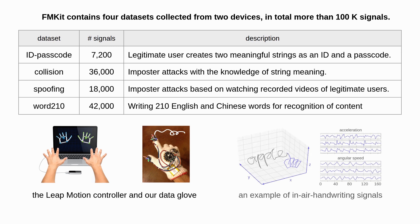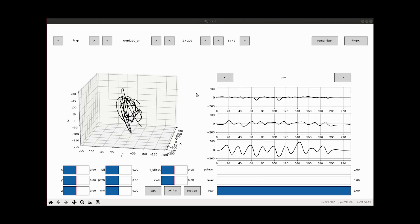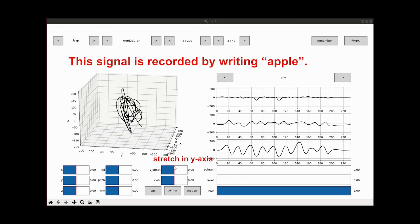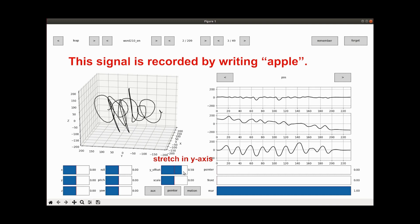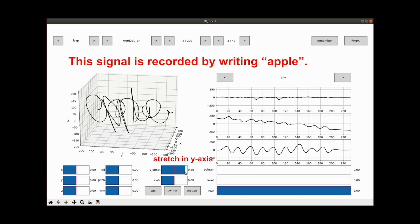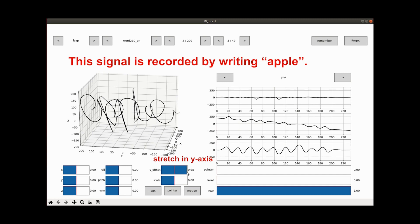An example signal of writing 'Apple' is shown here. FMKit also provides an open source library and an open source tool written in Python to process and visualize in-air handwriting signals.